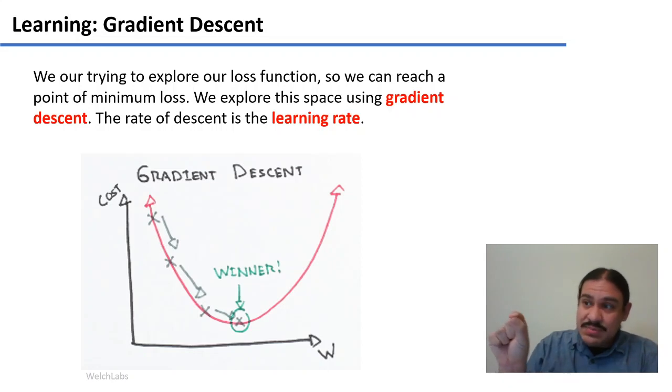So if you take small steps, you may never get there. But if you take steps that are too large, maybe you will skip back and forth, never going into the shallow. So the correct learning rate is one parameter, hyperparameter that we can fix and that we need to think about.